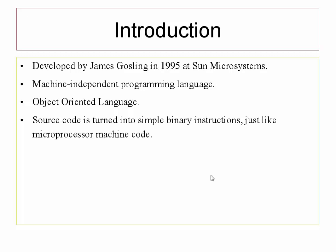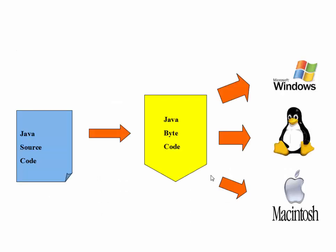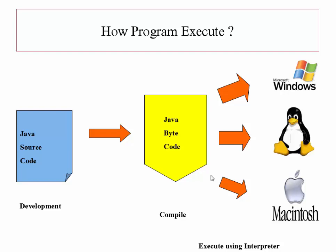The source code which we write in a Java program is converted into simple binary instructions, just like microprocessor machine code which a machine can understand. Now let's understand how a program executes. Whenever we write source code, that is called the development process. When we compile our source code, it gets converted into Java byte code.